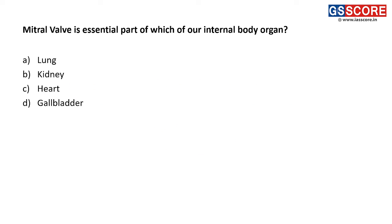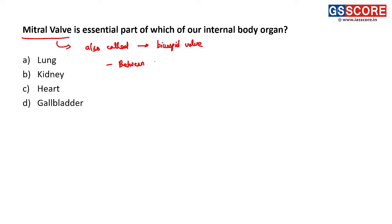First question: the mitral valve is an essential part of which of our internal body organs. The mitral valve, also called the bicuspid valve, is the valve between the left atrium and the left ventricle of the heart. That is why the answer is C.